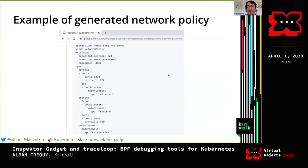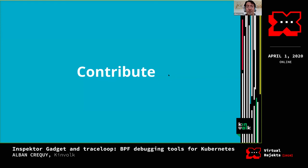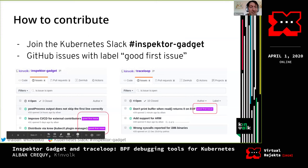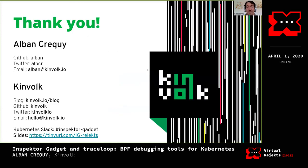If you want to contribute to Inspector Gadget, you can join the Kubernetes Slack channel Inspector Gadget. I've also created issues on GitHub with a 'good first issue' label — issues that are a bit easier or where I can provide guidance. Please join the Kubernetes Slack channel if you're interested. That's the end of my talk, I can take questions, and the link to the slides is at the bottom of this slide.